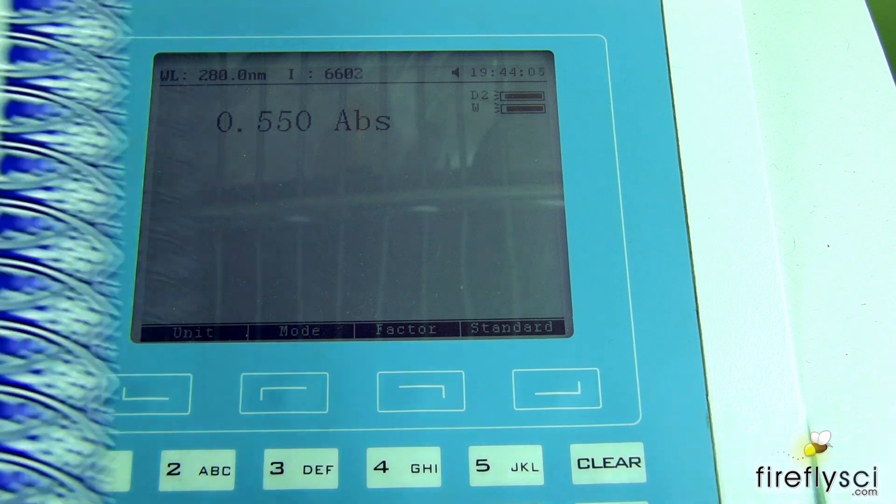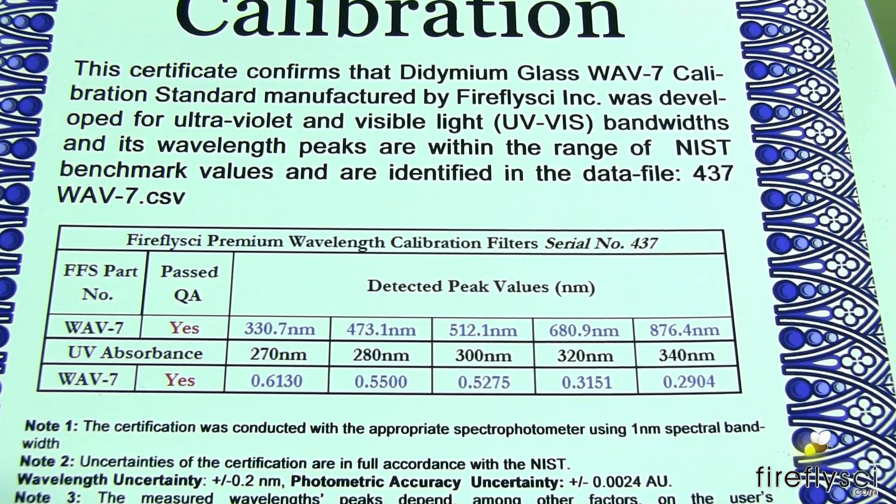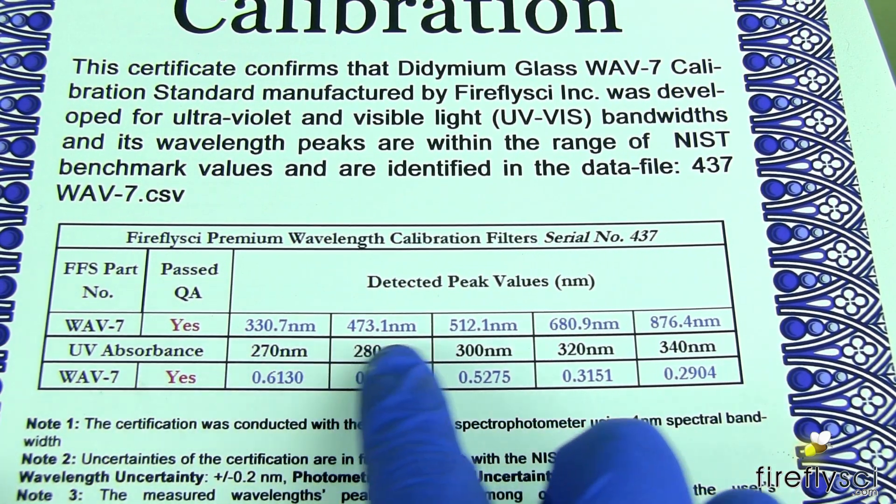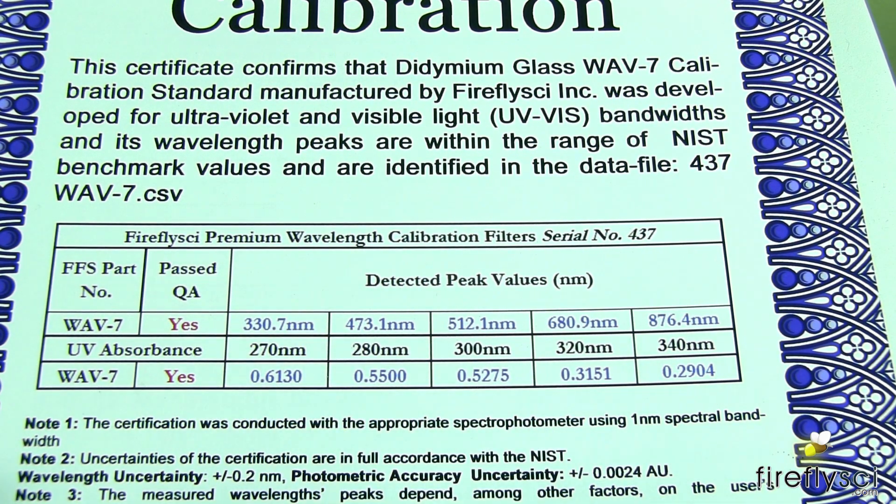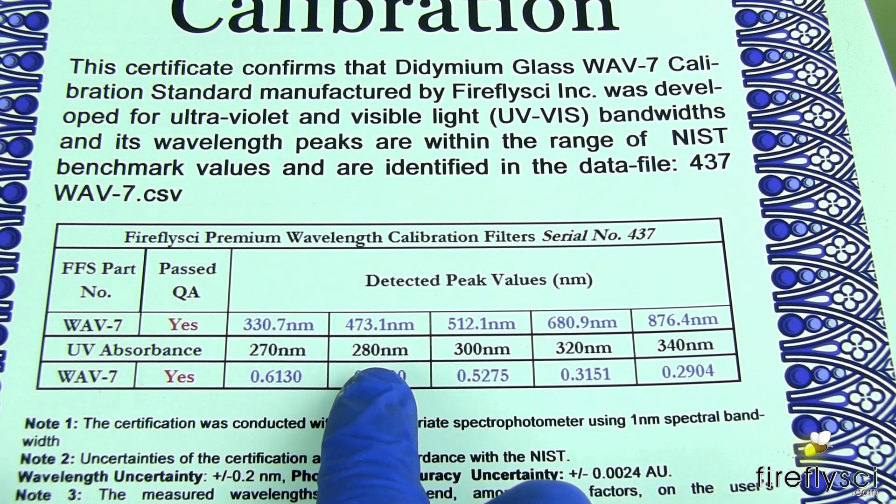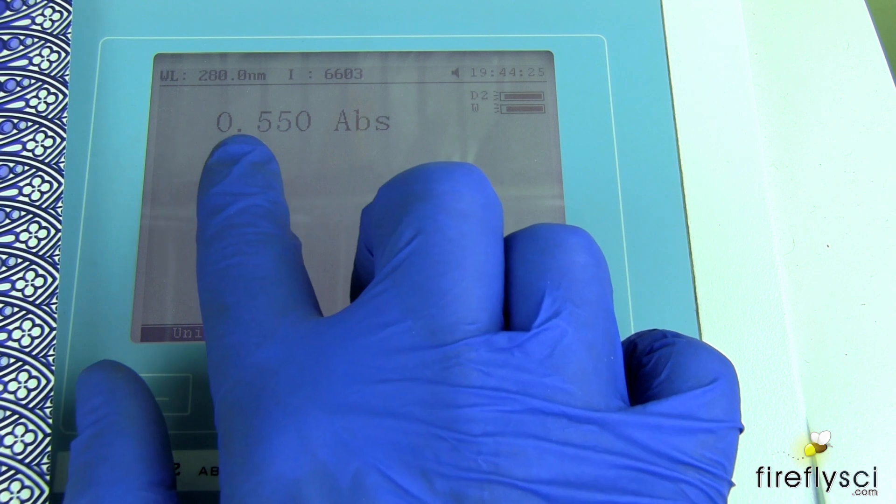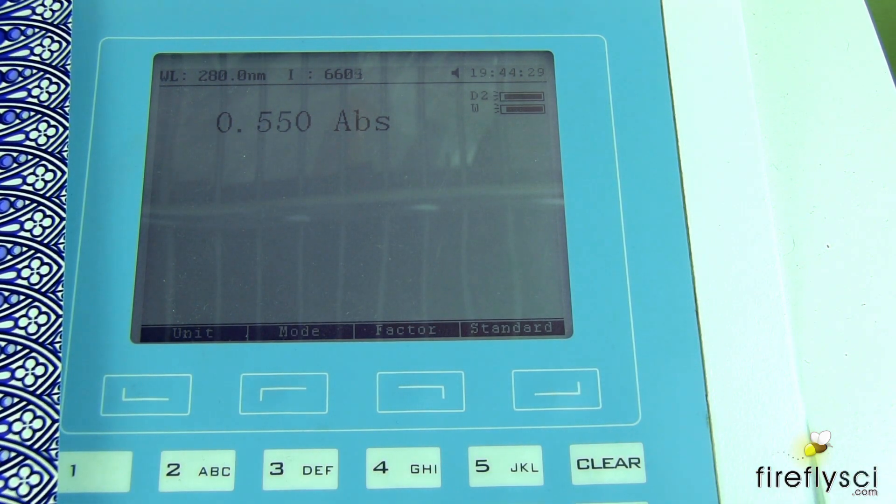Here is the value our machine is giving us and we'll just compare this to what is on the certificate of calibration. The WAV 7 certificate is broken up into two different rows. The top row is for wavelength accuracy and the bottom row where it says UV absorbance is for photometric accuracy. So on the certificate we see a value of 0.550 for 280 nanometers and now we'll just compare this to what our machine is showing us. And we have an exact match at 0.550.